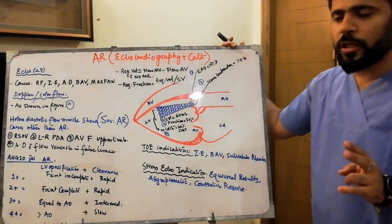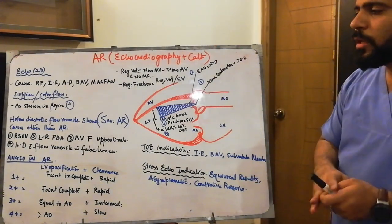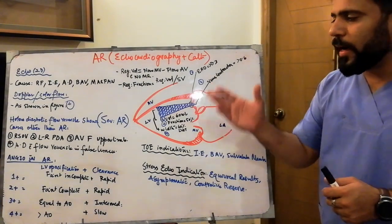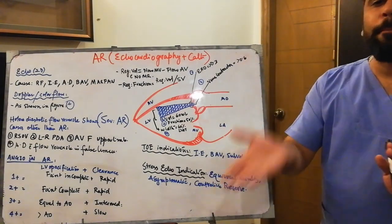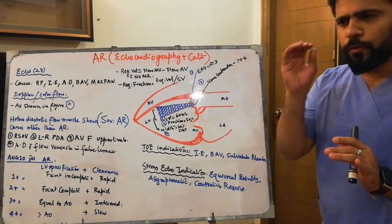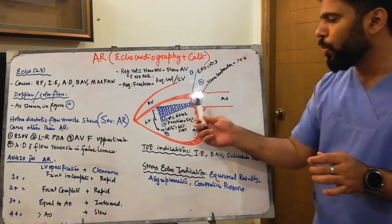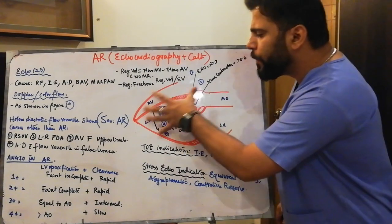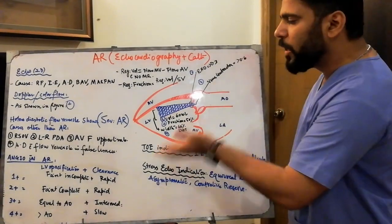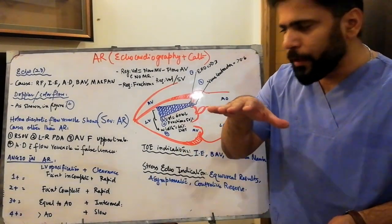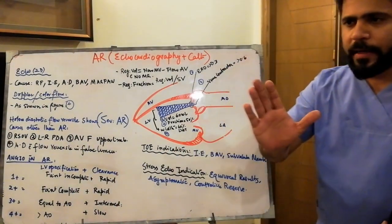In catheterization of AR, two things are assessed: LV opacification and rate of clearance on aortogram. In mild AR, there is faint and incomplete opacification of the LV with rapid clearance of contrast in the same beat. In mild-to-moderate AR, there is faint but complete opacification of the LV, also with rapid clearance by the next beat.